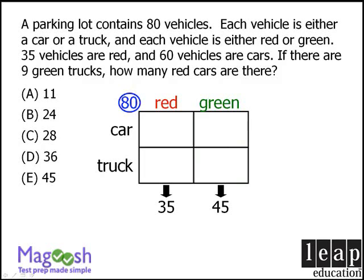Similarly, we are told that we have 60 cars. Now some of those 60 cars are red and some are green, so we can't place any of the 60 cars in either of these two boxes individually. However, we do know that the sum of these two boxes must be 60. Now if we have 80 vehicles altogether and 60 of them are cars, we can conclude that the remaining 20 vehicles must be trucks, so the sum of those two boxes must be 20.